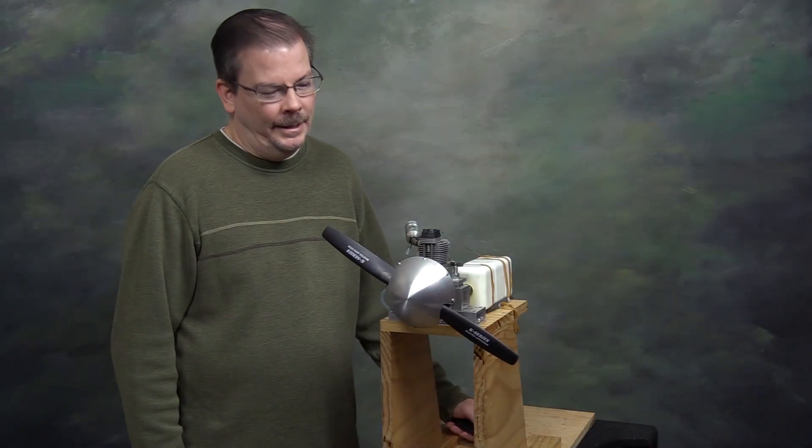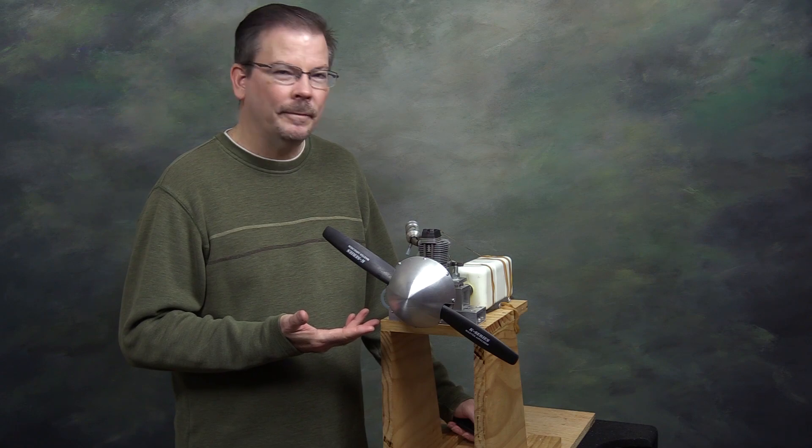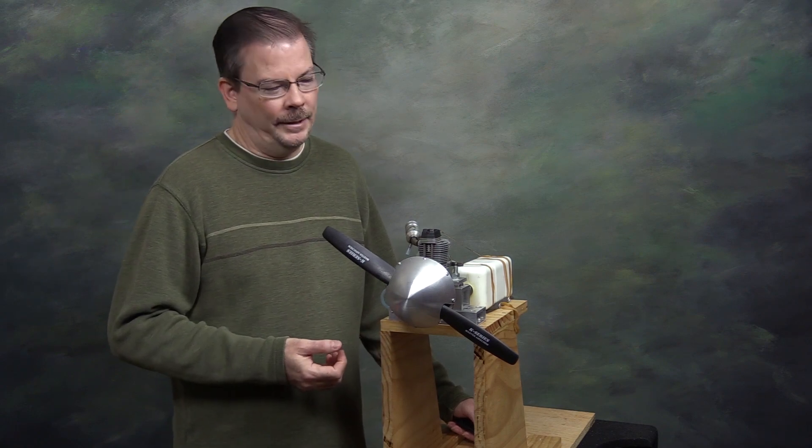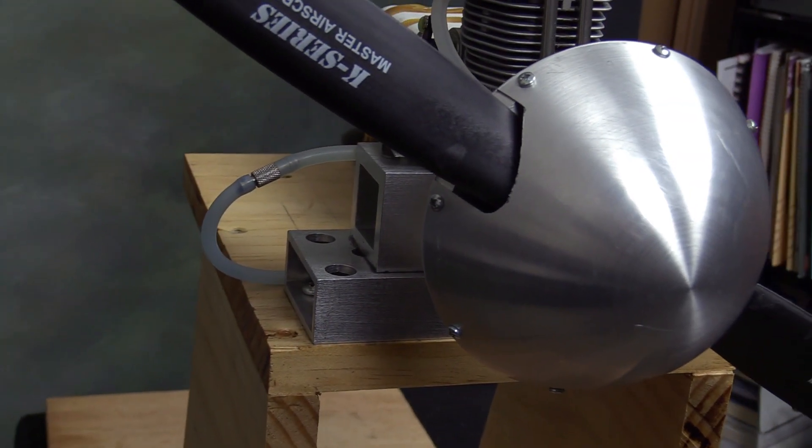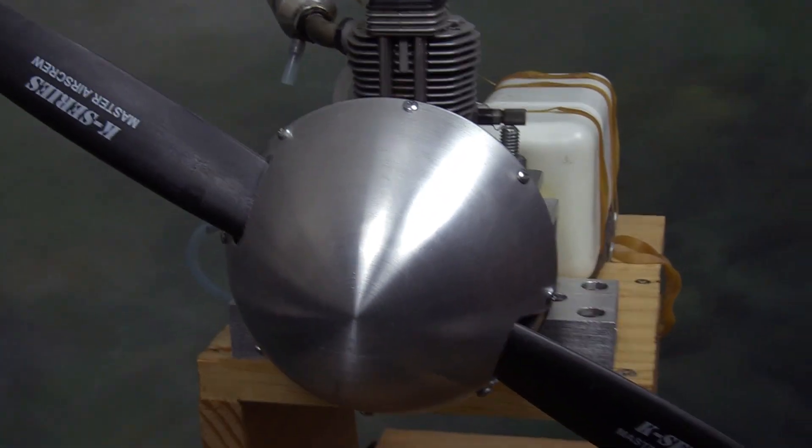Hello, it's James. I have this aluminum spinner mounted to my OS 91 four-stroke, made by Gene Barton. It is intended to go on a Funero RC Albatross D2 kit which I have partially constructed and put away in the closet.